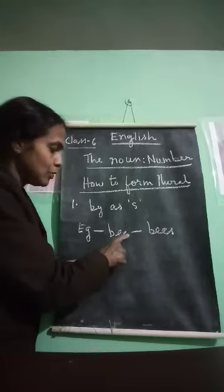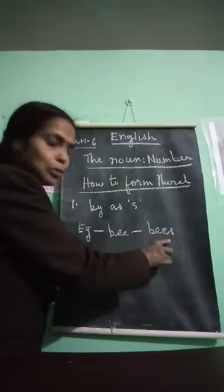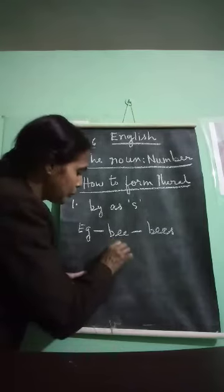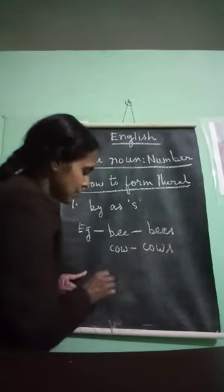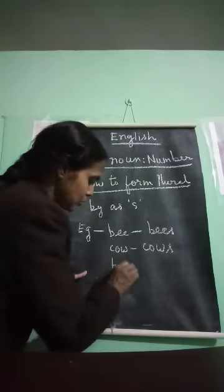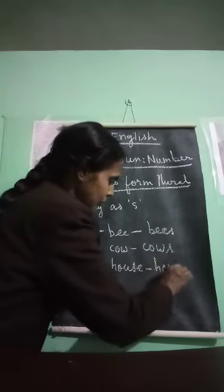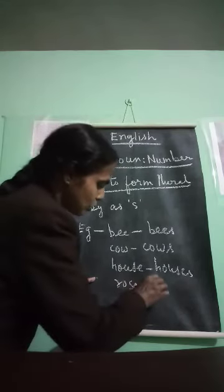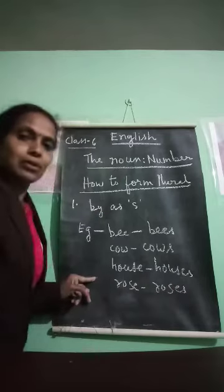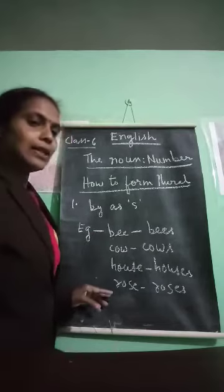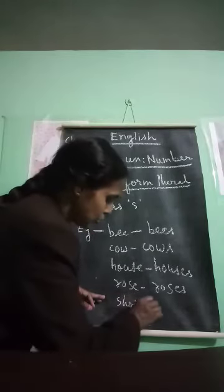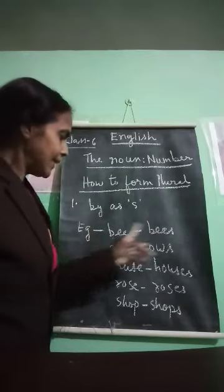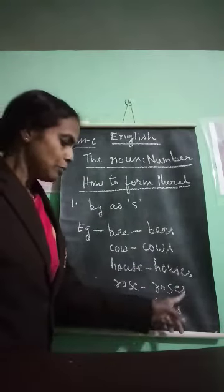For example, by adding -s to a singular noun, it forms the plural. Like: cow → cows, house → houses, row → rows, shop → shops. I have just added -s to the singular noun and it has formed the plural.